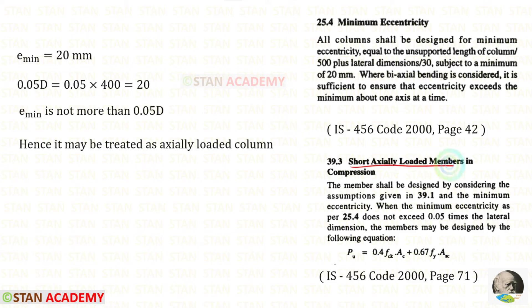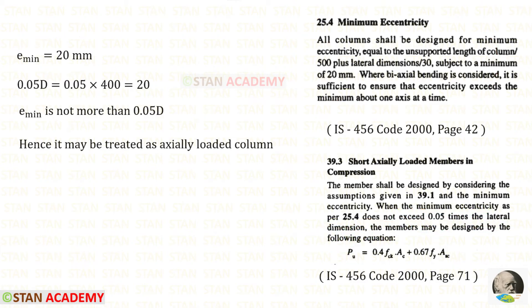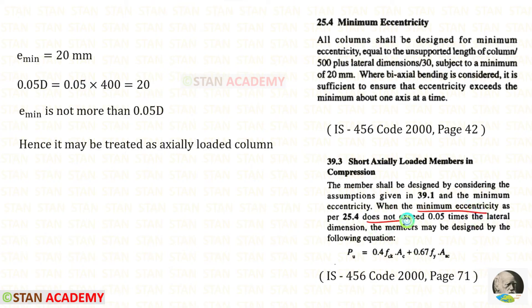For short axially loaded columns we can use the direct formula to find the area of longitudinal reinforcement, provided the minimum eccentricity as per clause 25.4 does not exceed 0.05 times the lateral dimension. Our lateral dimension is the diameter = 400, so 0.05 × 400 = 20. Since the minimum eccentricity equals exactly 20, the condition is satisfied and the column may be treated as an axially loaded column.